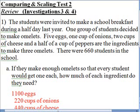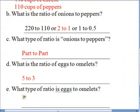Comparing and Scaling Test 2 Review, Investigations 3 and 4. This video is for question 1E. We're going to need to read letter E. It says: what type of ratio is eggs to omelets?